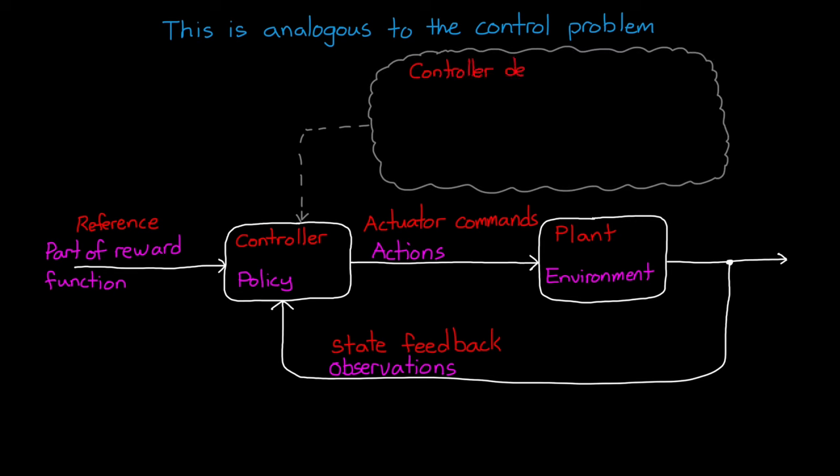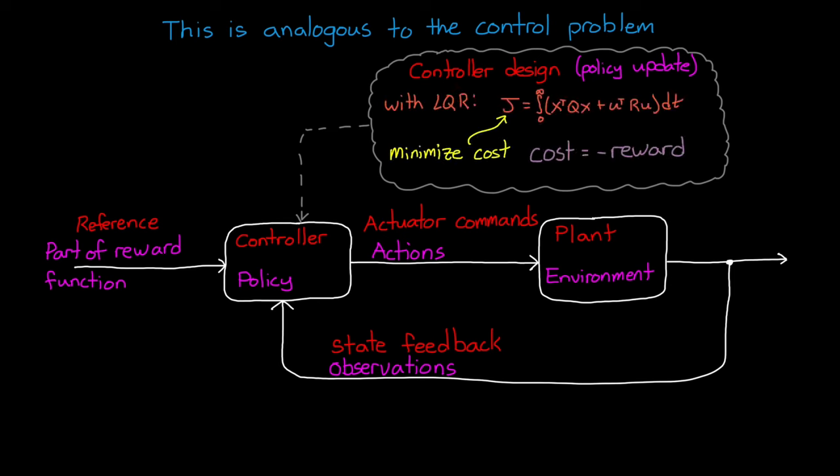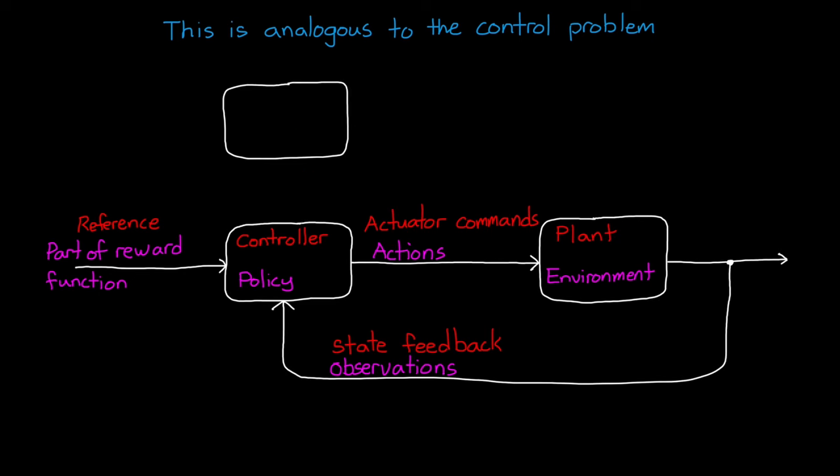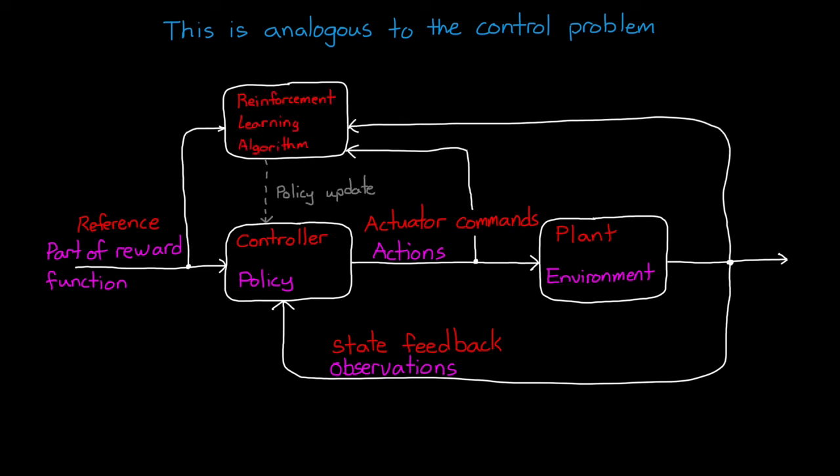And when we design a controller, we're basically doing a one-time policy update. And one of the ways that we can design an optimal controller is by minimizing a cost function, like we do with LQR. And cost is just the negative of reward, so by maximizing the reward, we're solving the same problem as minimizing cost. The difference is that with reinforcement learning, the computer tries to learn the optimal behavior over time, rather than have the designer solve for it explicitly. It's like the adjustment mechanism in an adaptive controller, where it's tweaking the parameters at each sample time.